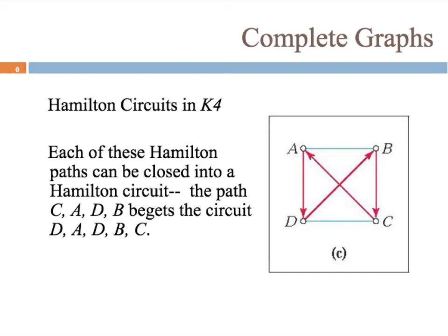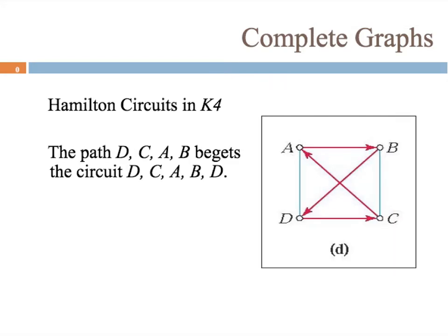Each of these paths can be closed into a Hamilton circuit. Going back, starting at c again: we go to a, d, b, and then we can come back to c — so instead of just a path we make it a circuit. Same thing here: d, c, a, b, and then we go back to d to make it a circuit.